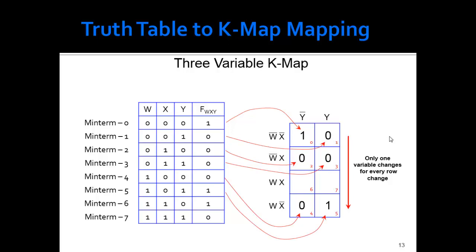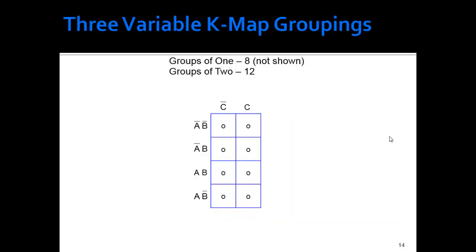So the next one that's going to go in is W, X, not Y, and then finally W, X, Y. So there are groups of 1, 8, there are groups of 2.